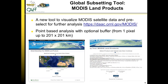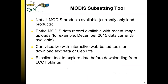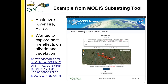The tool can extract MODIS data by point and produce visualizations through an interactive web browser, or you can download text data or GeoTIFFs. This is going to be an excellent tool to explore data before downloading it from the LCC holdings. I'm going to show an example from the Anachubic River fire in Alaska — I wanted to explore post-fire effects on albedo and vegetation in this area. I inserted a specific lat/long point with a three-kilometer by three-kilometer buffer, and the tool shows you roughly what that buffer represents visually — important to check especially since MODIS pixels at high northern latitudes get somewhat compressed with the sinusoidal projection.